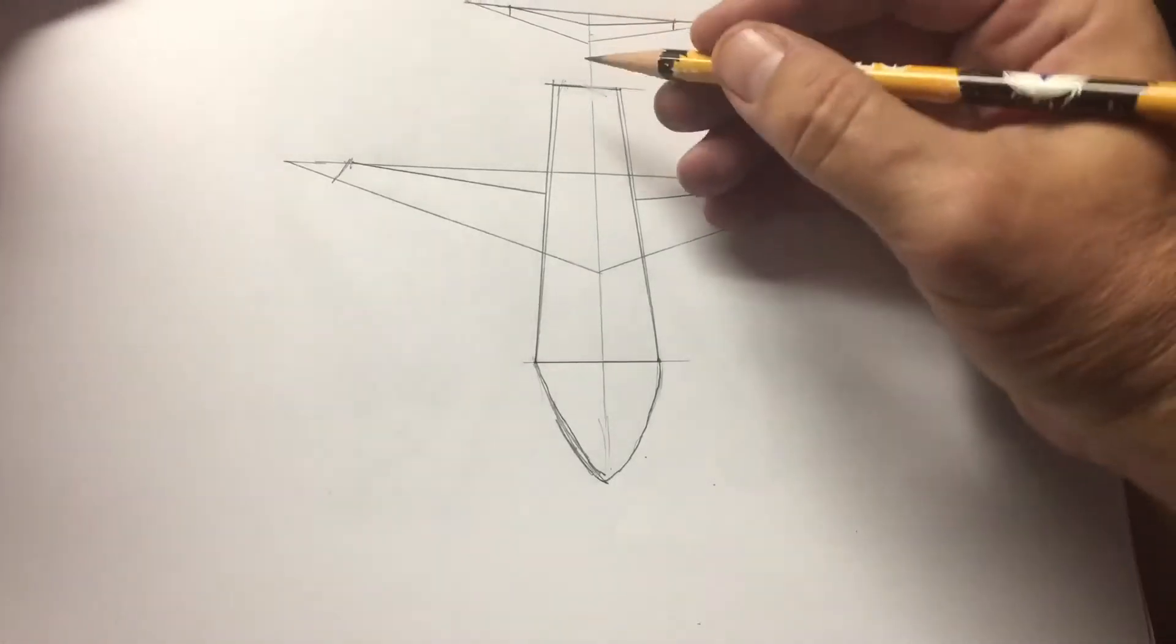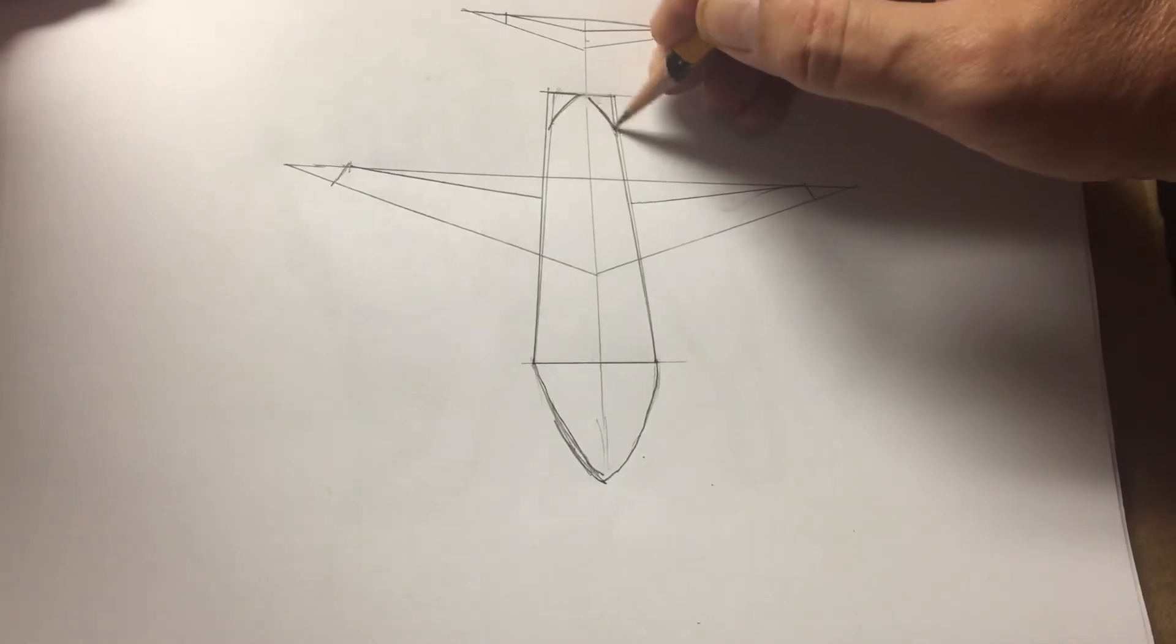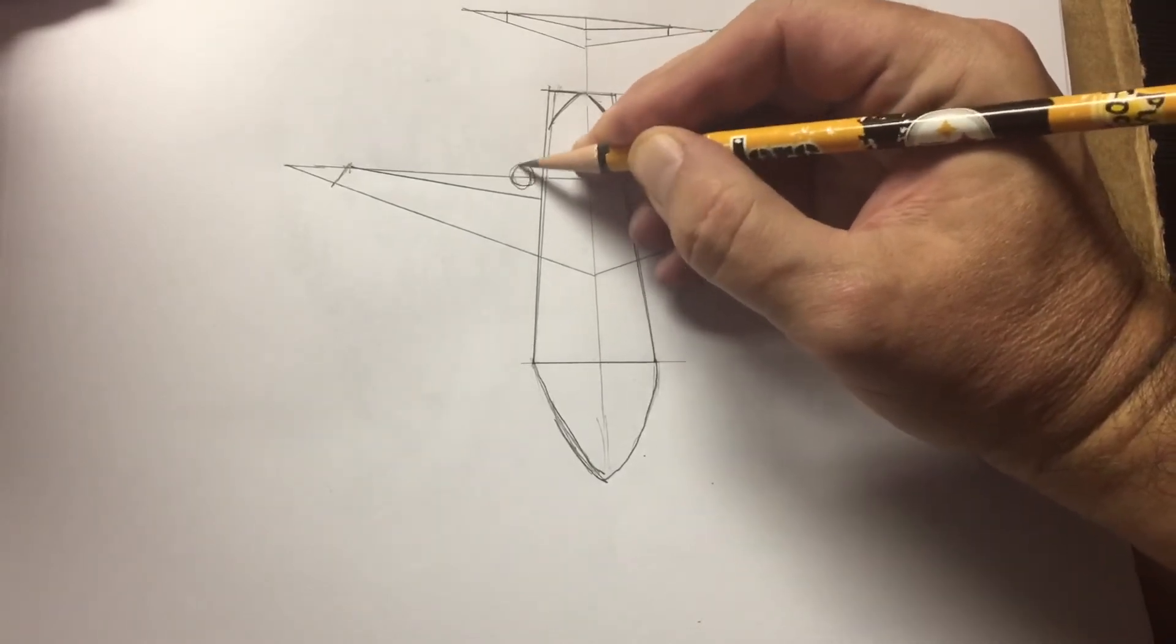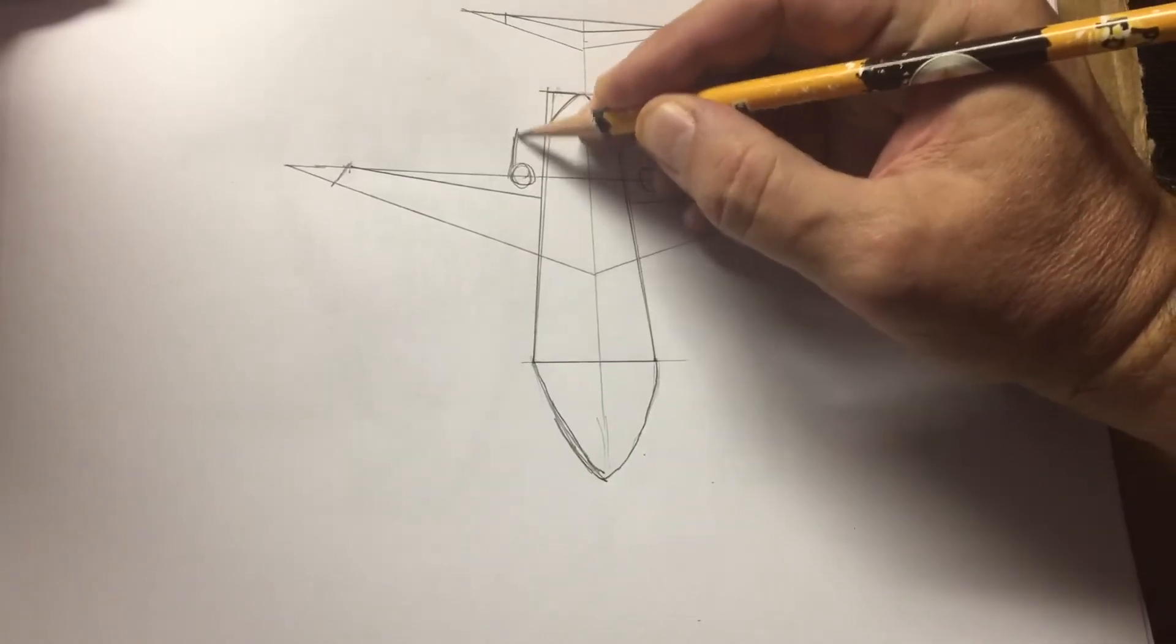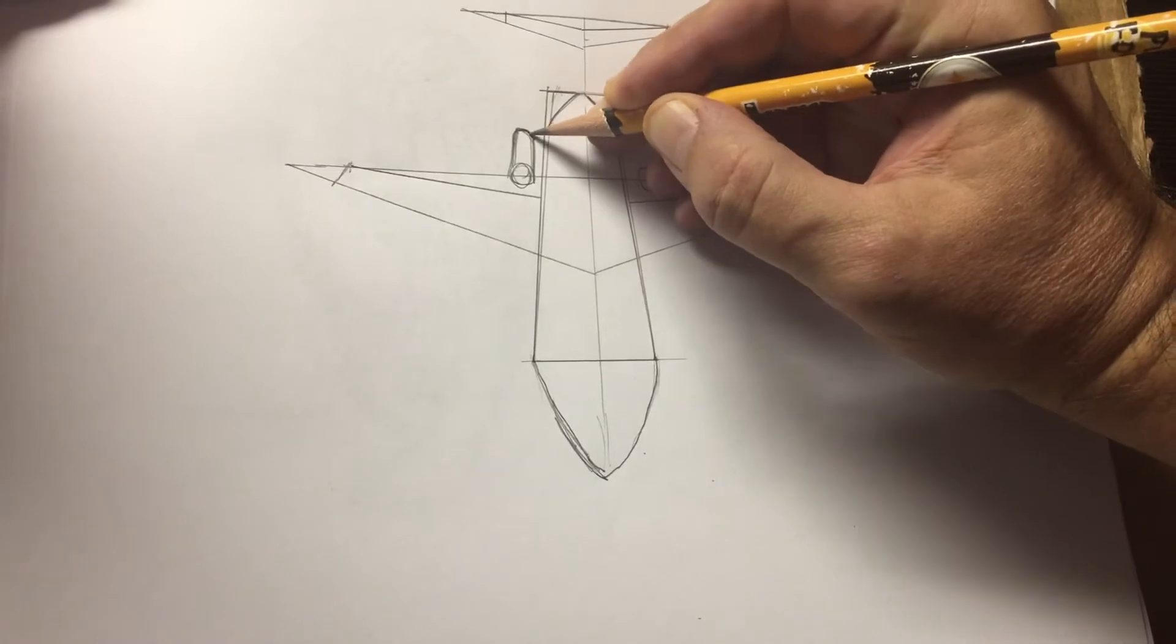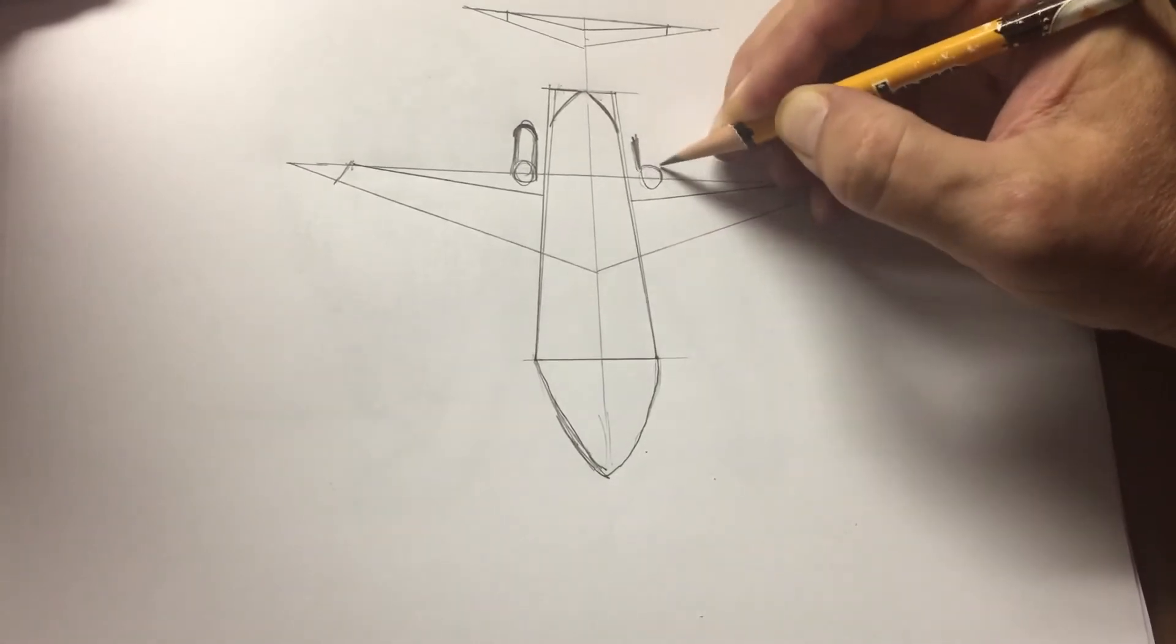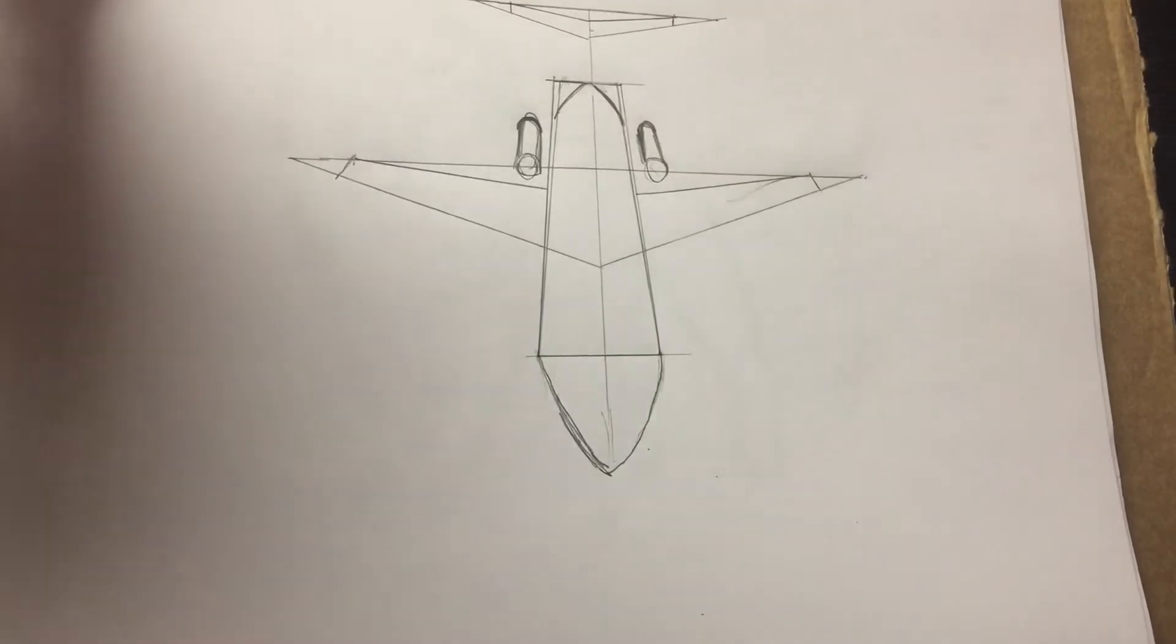Next, at the back of the plane, let's add some curved areas for the back. Also, almost touching the plane, let's get a couple of circles. Let's make them cylinders. So two parallel lines and a curved line at the top. Right about there. It's going to be the jet engines.